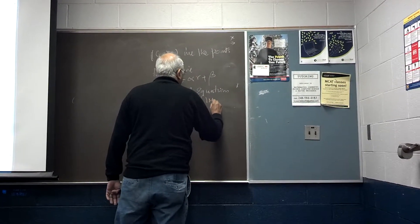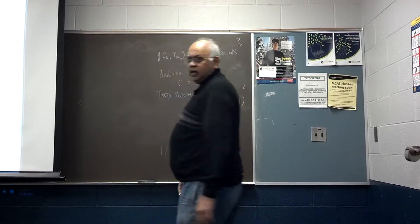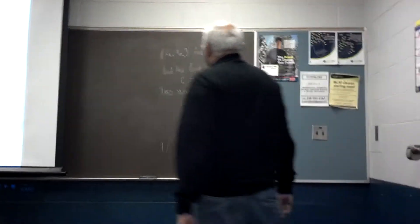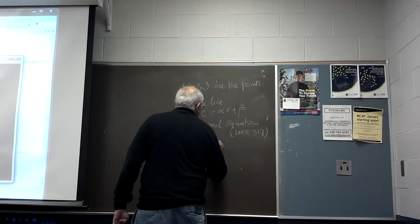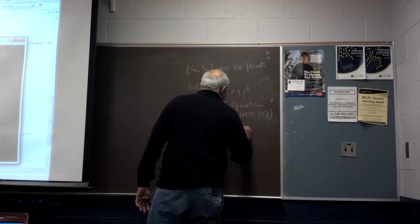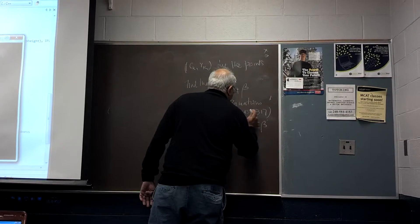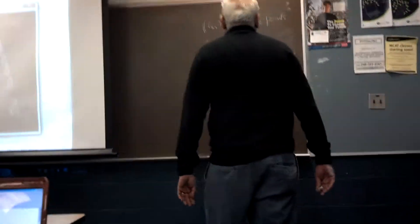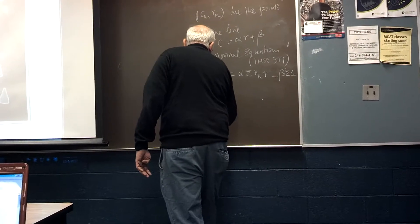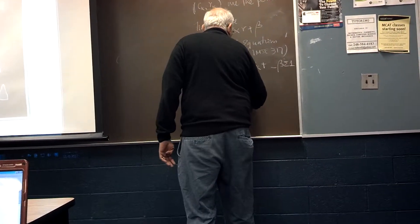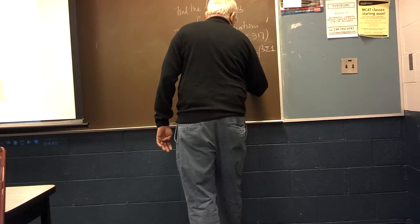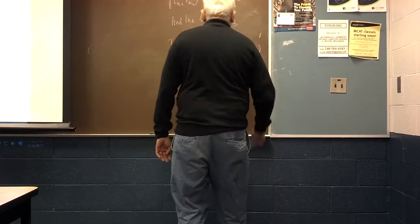So you have two equations. The first equation says that sigma CK equals alpha times sigma rk plus beta times sigma 1. And the second equation is sigma CkRk equals alpha times sigma Rk squared plus beta times sigma Rk.